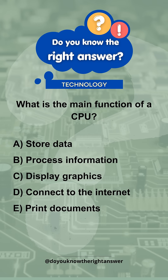Router. What is the main function of a CPU? A. Store Data. B. Process Information. C. Display Graphics. D. Connect to the Internet. E. Print Documents.